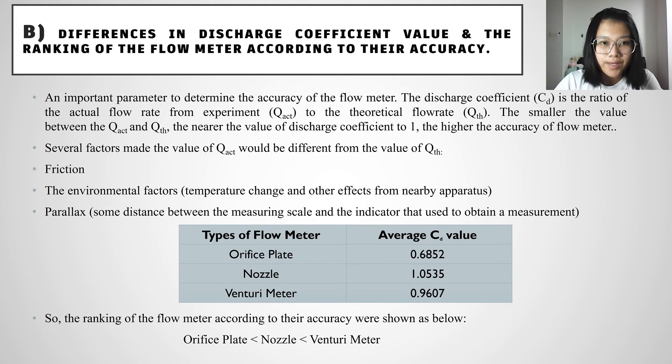Hi, I'm Ko Hui and now I'll continue with question 2, which is the difference in the discharge coefficient value for each of the flow meter and rank the flow meter according to the accuracy. This discharge coefficient actually is an important parameter to determine the accuracy of the flow meter. The discharge coefficient is the ratio of the actual flow rate we get from the experiment to the theoretical flow rate.